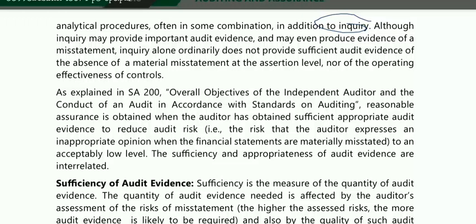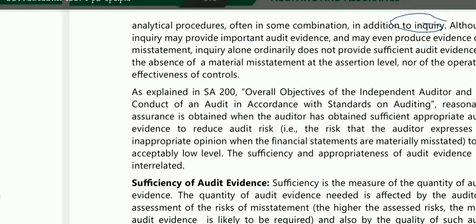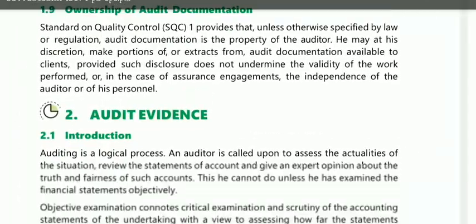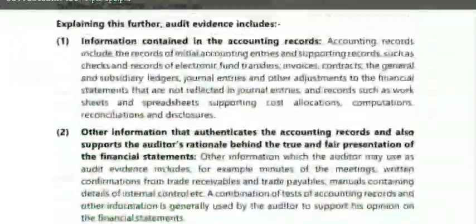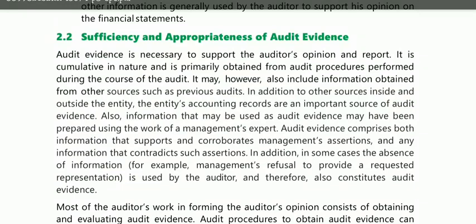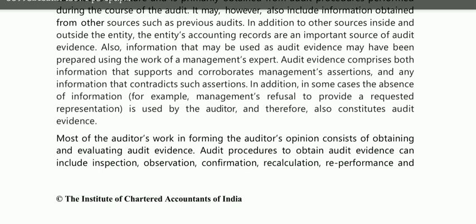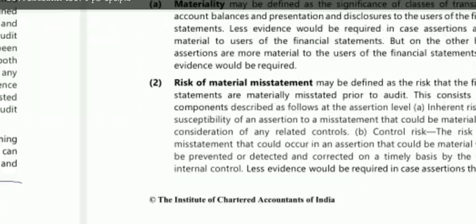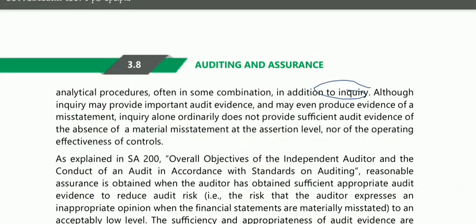Welcome back to CA Dreams YouTube channel. This is video number two for chapter three of auditing. In the last video, we discussed the meaning of audit evidence, the introduction, the meaning of information and accounting records, and we started with the topic of sufficiency and appropriateness of audit evidence. We perform audit procedures like inspection, observation, confirmation, recalculation, re-performance, and analytical procedures — not just inquiry alone.